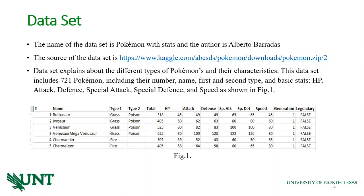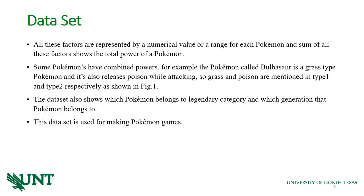This dataset has 721 Pokemons including their name, hash, type, and basic stats like health, attack, different special attacks, and special defense, as shown in the video. All these factors are represented by numerical values or a range for each Pokemon, and together they show the total power of the Pokemon.